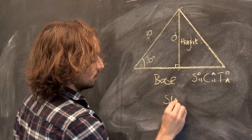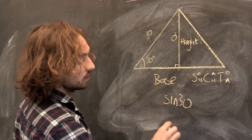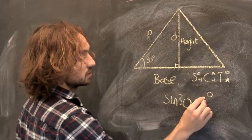So we know that sine of 30, using our SOHCAHTOA, that's opposite over hypotenuse. Opposite is here, over hypotenuse, that's our 10.